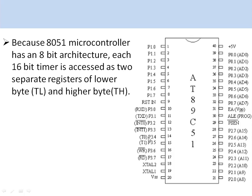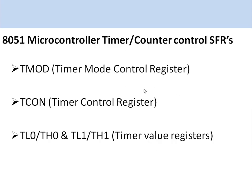These timers can also be used as counters. Whenever the timers are programmed as counters, pins port 3.4 and port 3.5 come into picture, and the microcontroller will count external events coming from outside. Whenever the timers are programmed as timers, they get their clock from the microcontroller crystal.